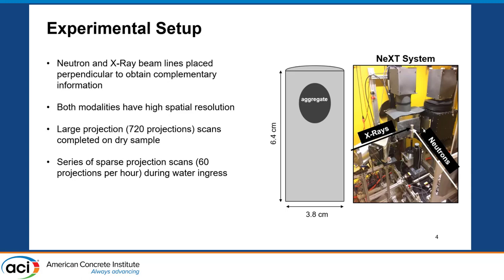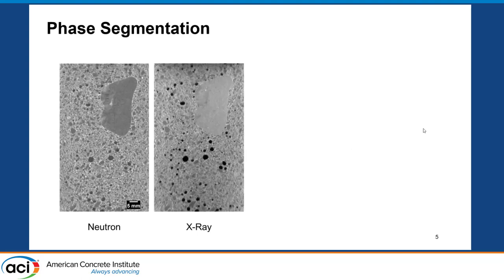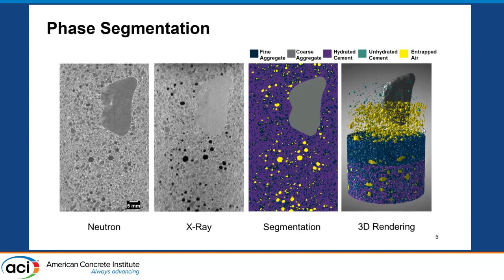The system has a 30 micron per voxel resolution, which is around 60 micron spatial resolution. Phase segmentation was heavily improved by combining the neutron and X-ray information. We were able to segment out fine and coarse aggregates very well, and then the hydrated cement, unhydrated cement, and entrapped air very well. This demonstrates how effectively we can segment those phases using that complementary information.